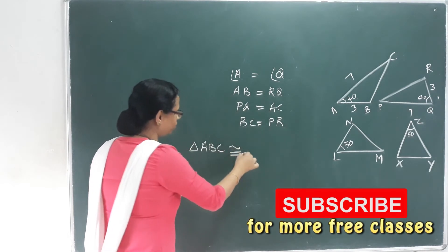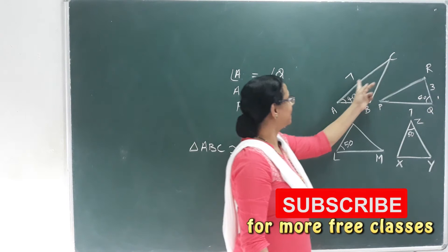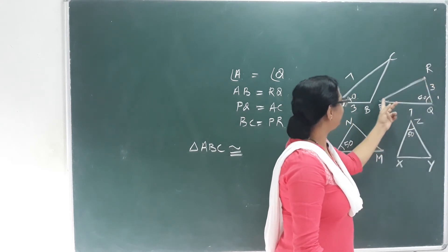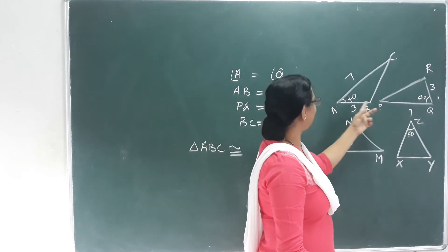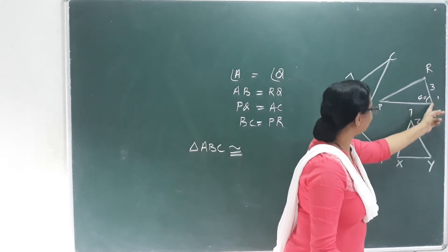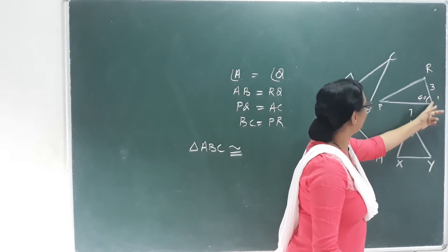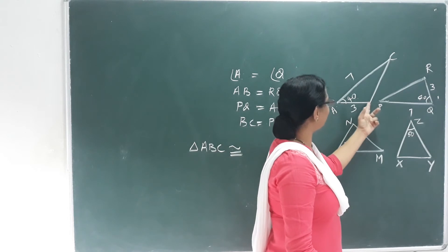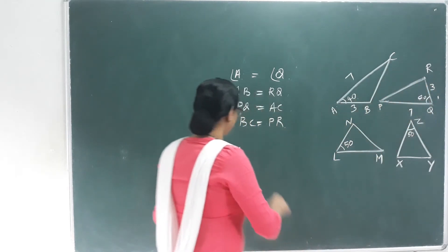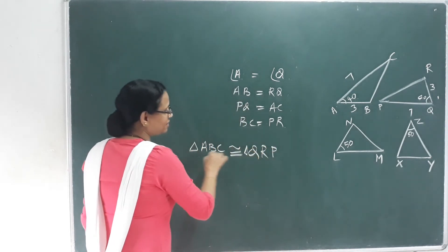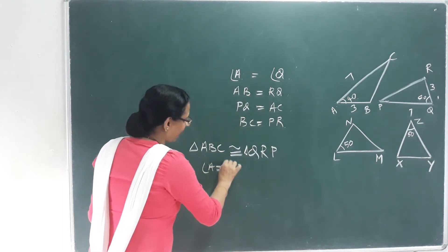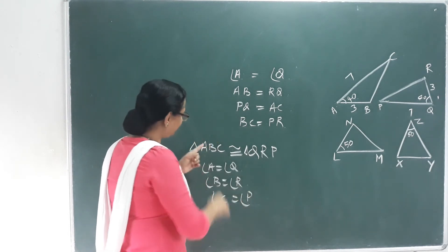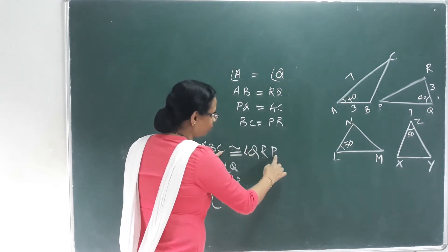RQ is congruent to triangle A, B, C. That's why we come here: Q, R, P. Triangle ABC — that's 40 degrees. So we come here: A, B, C is congruent to Q, R, P. Angle A is equal to angle Q. Angle B is equal to angle R. Angle C is equal to angle P.